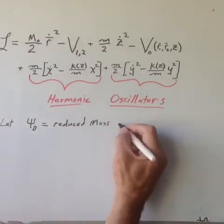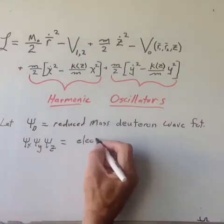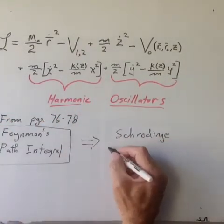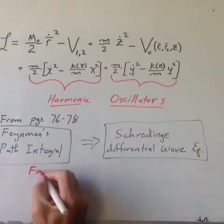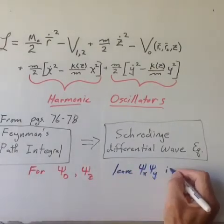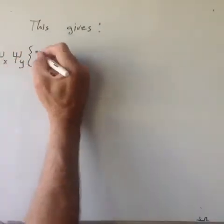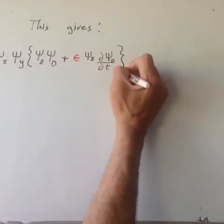If we let the wave function be represented as shown and rewrite the path integral for the deuterons and the z-component of the electron in the differential Schrodinger form as developed on pages 76 through 78, we get the following equation describing the wave functions for the two deuterons and the electron.